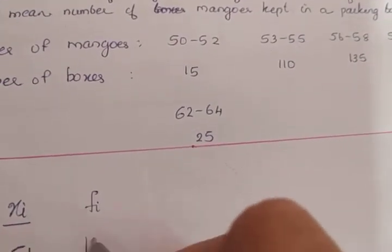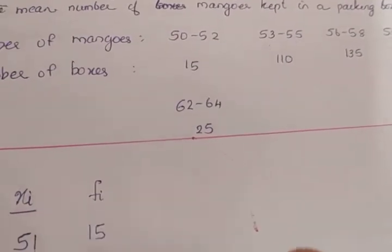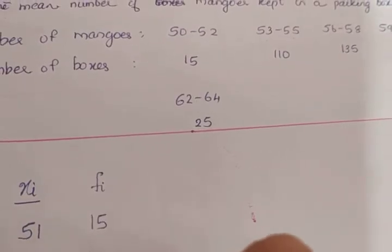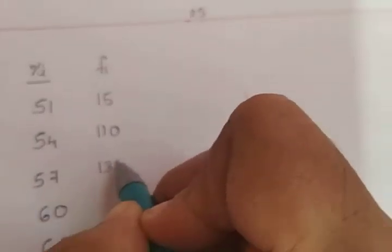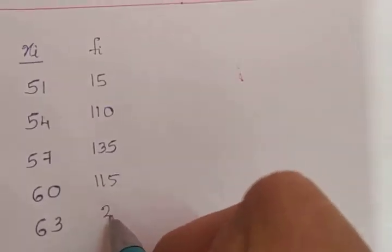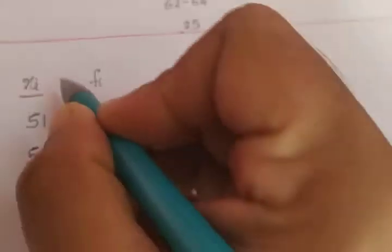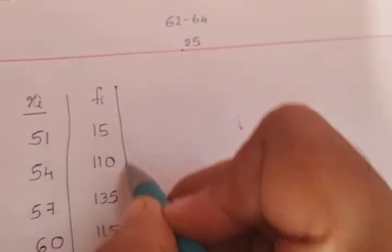fi values as given are: 15, 110, 135, 115, and 25. So we have written xi and fi. The next step is to calculate di.